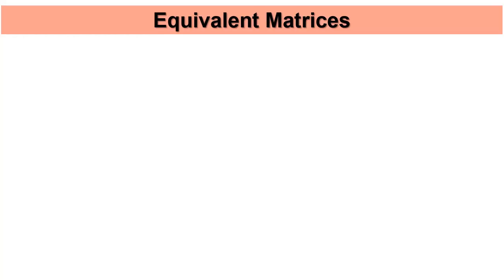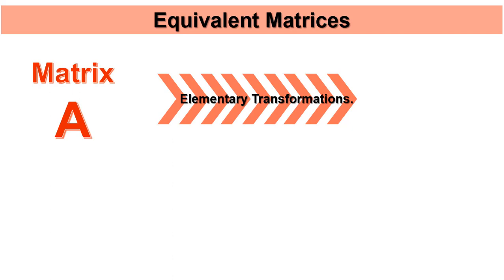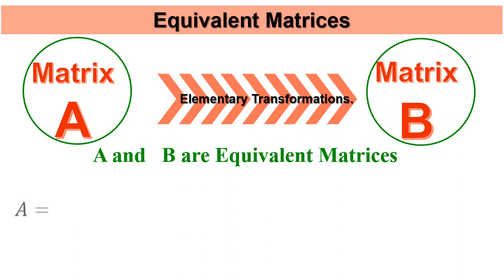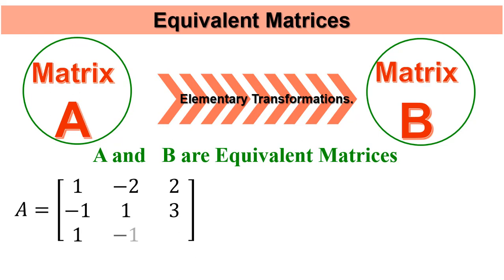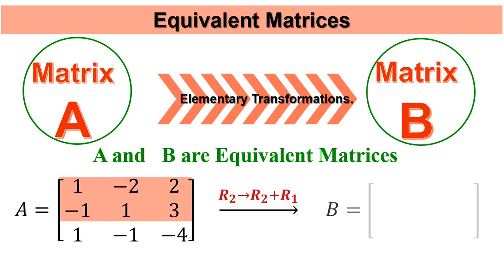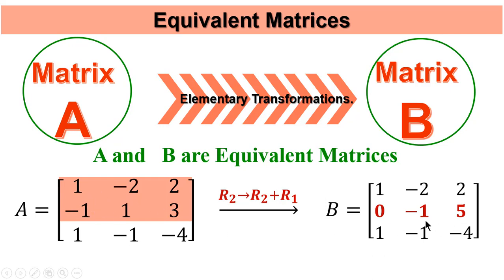The next term is equivalent matrices. Suppose A is a matrix. We can say that A and B are equivalent matrices. For example, suppose A is a matrix and we change the second row: R2 implies R2 plus R1. We modify the row and change the second row.